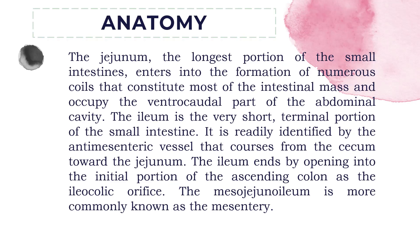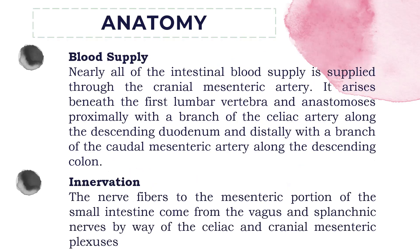The ileum ends by opening into the initial portion of the ascending colon as the ileocolic orifice. The mesojejunum is more commonly known as the mesentery. Nearly all the intestinal blood supply is supplied through the cranial mesenteric artery, which arises beneath the first lumbar vertebra and anastomoses proximally with a branch of the celiac artery and distally with a branch of the caudal mesenteric artery. The nerve fibers to the mesenteric portion of the small intestine come from the vagus and splanchnic nerves by way of the celiac and cranial mesenteric plexuses.